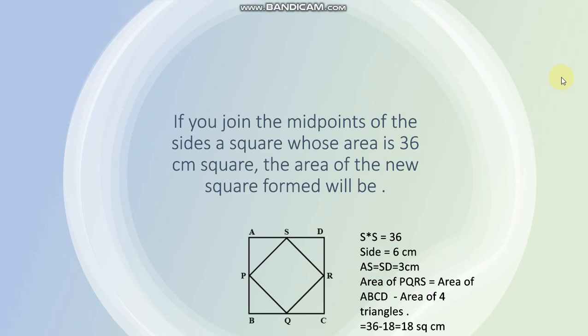Next question is if you join the midpoints of the sides of a square whose area is 36 cm square, the area of the new square formed will be... Yeh outer square hai ABCD, iske midpoints hai. Midpoint of AB is P, midpoint of AD is S, midpoint of DC is R, and midpoint of BC is Q. To now we join the midpoints.